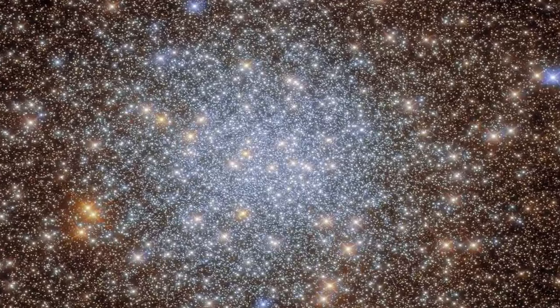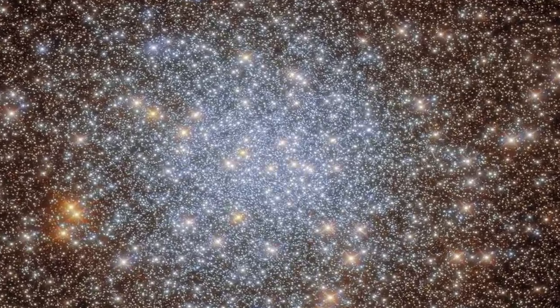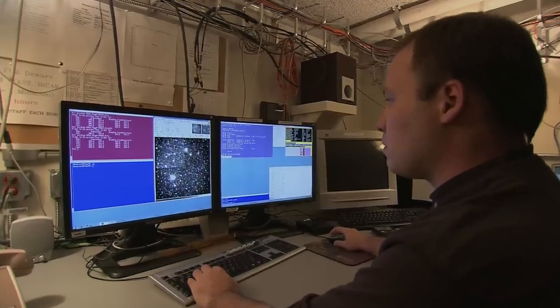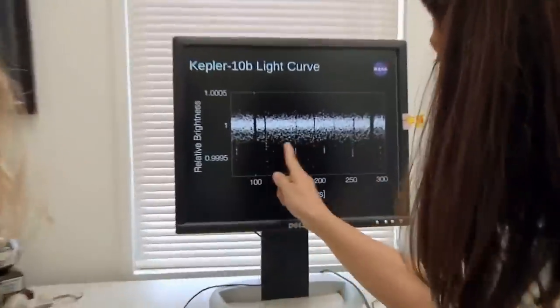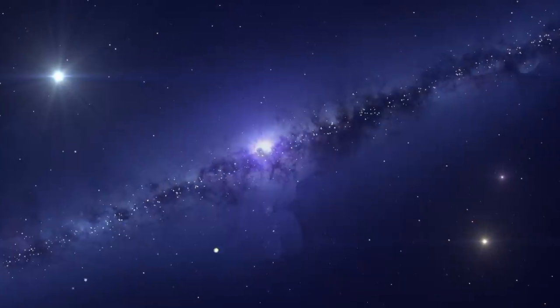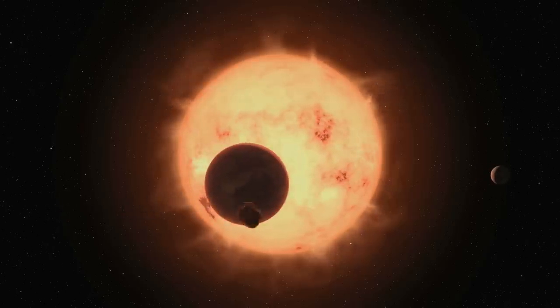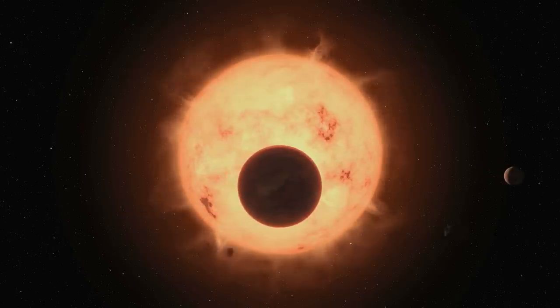Since it's true that our galaxy is teeming with planets, could some of them be home to extraterrestrial life? According to astronomers, the answer is yes. And they claim that these planets can be found in what is known as the Goldilocks zone.